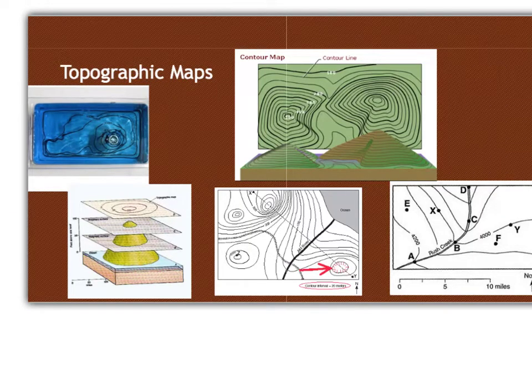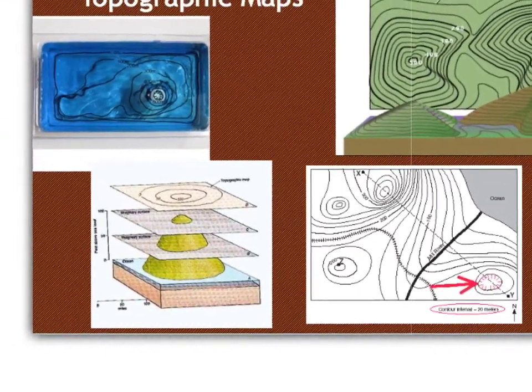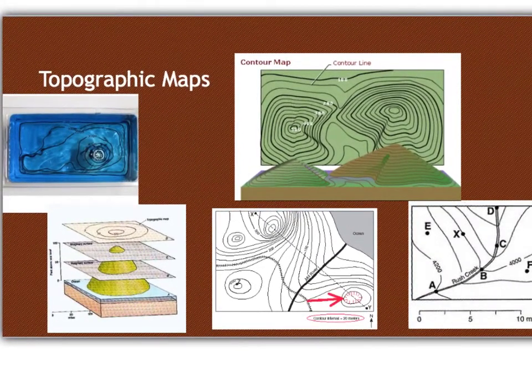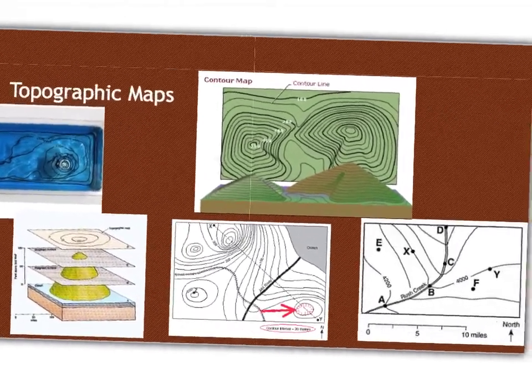Topographic maps show us elevation or the lay of the land. So you can see here in this picture how we get a topographic map. A topographic map is just that series of circles on the map. So that shows us elevation. Each line or circle on the map represents a specific elevation of whatever piece of land you're trying to measure here.